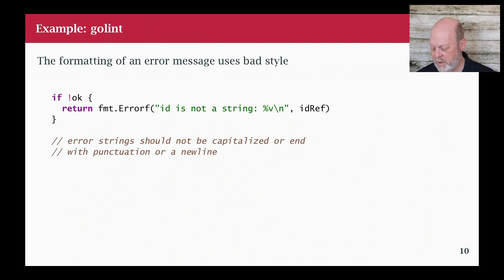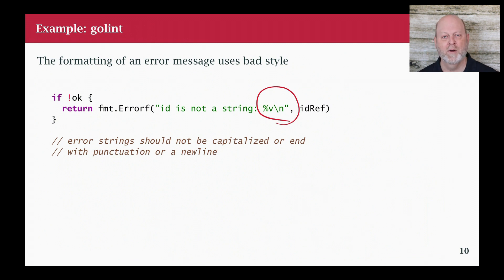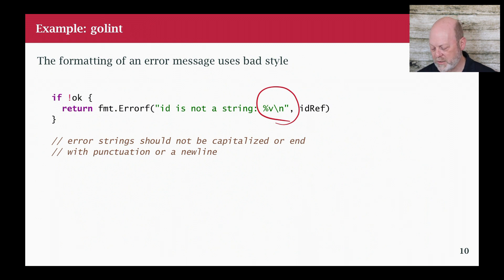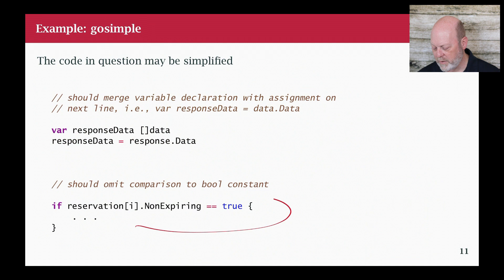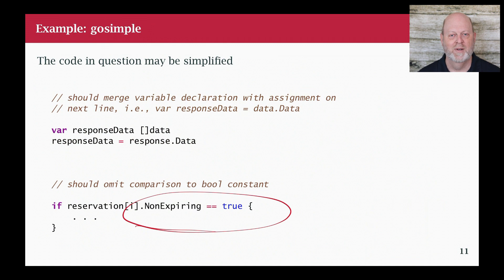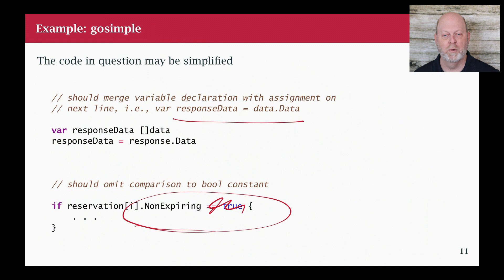GoLint is going to tell you about style issues. Here's an example: I put a newline at the end of my error string, probably because this was converted from a printf to an errors.New, and the string just didn't get edited. So GoLint comes and says, hey, you shouldn't do that. GoSimple is a way of showing you code that can be simplified. A Boolean does not need to be compared to true — a Boolean is either true or false, so we can just drop that comparison. Here's another example where a variable and initialization could have been written on one line. That's just code simplification.